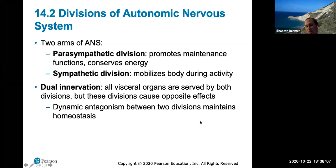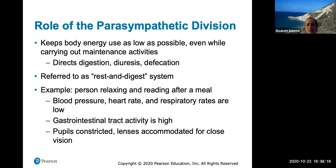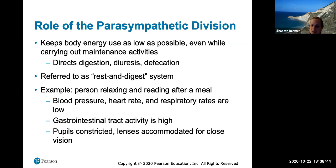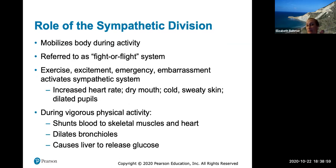The parasympathetic division keeps body energy use as low as possible, even while carrying out maintenance activities like digestion, diuresis, and defecation. For example, a person relaxing after a meal will have low blood pressure, heart rate, and respiratory rate. GI tract activity is high as the digestive tract works. Pupils become constricted because there's no need to take in extra light, and the lenses accommodate for close vision.